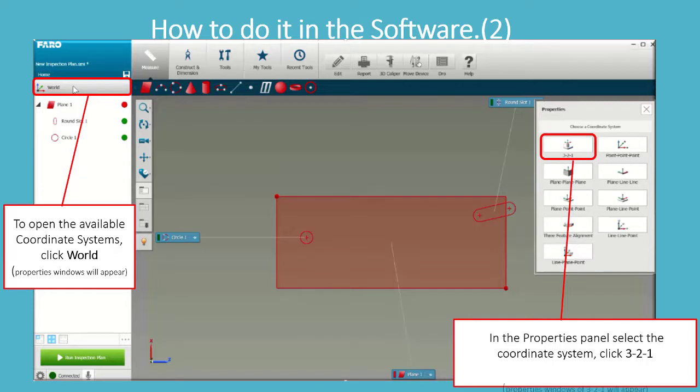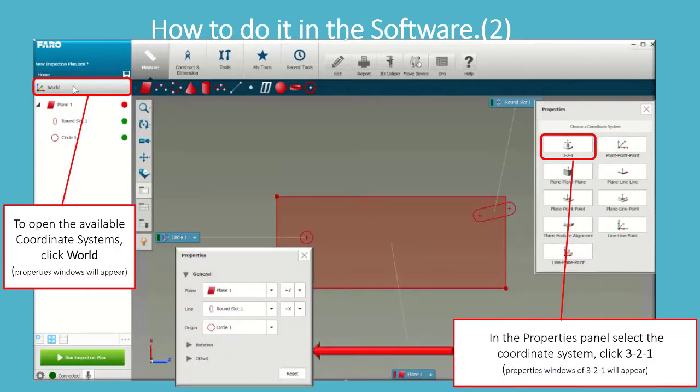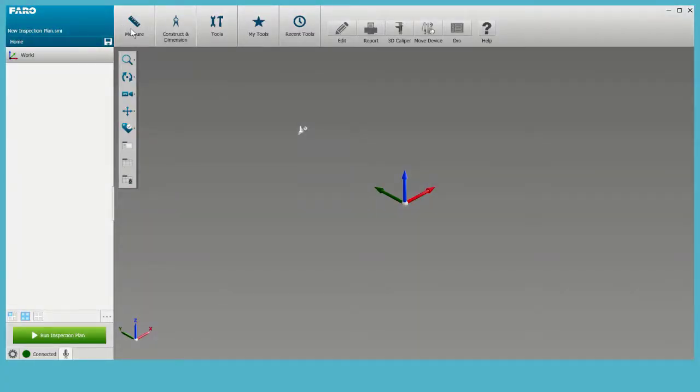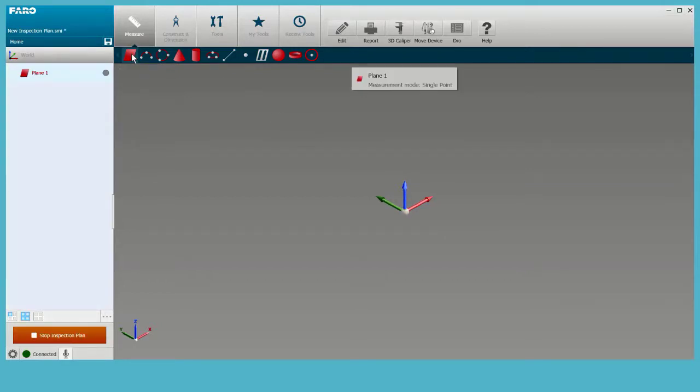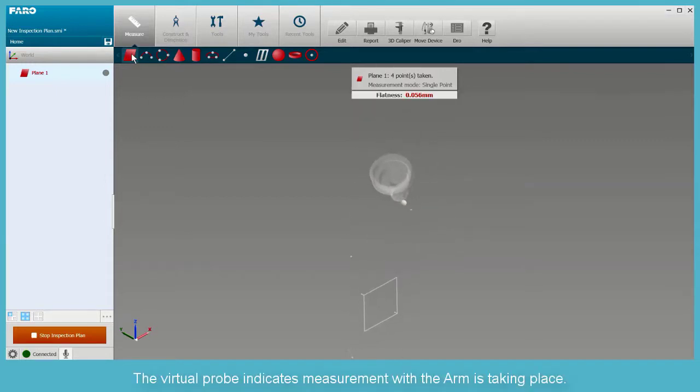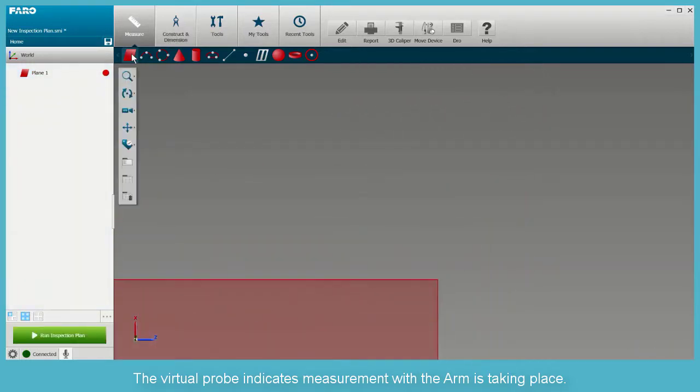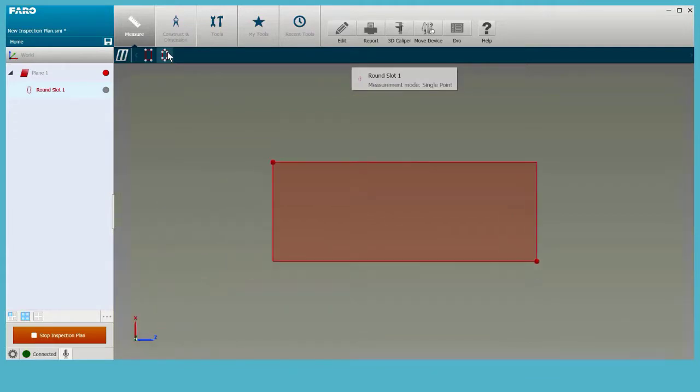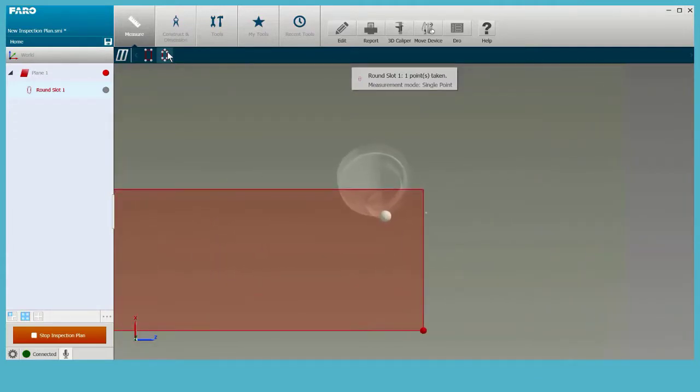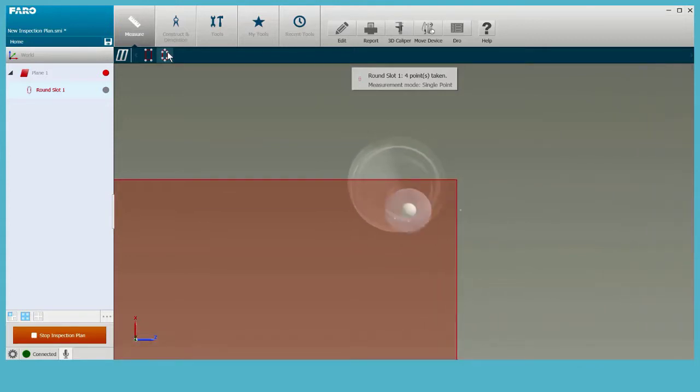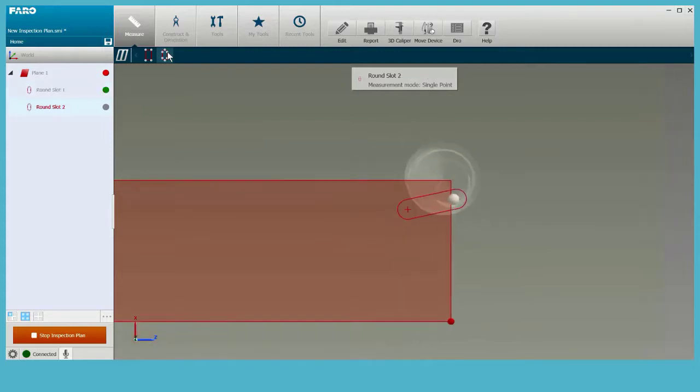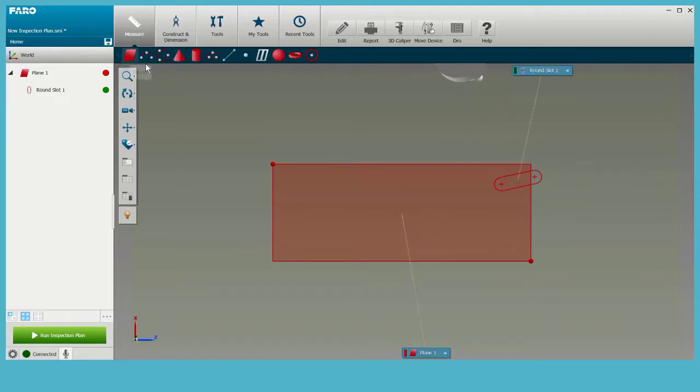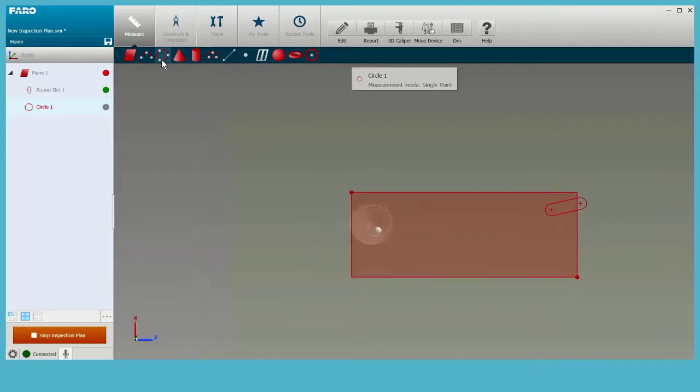In the properties panel, select the coordinate system and click 3-2-1. The properties window for 3-2-1 will appear in the settings.